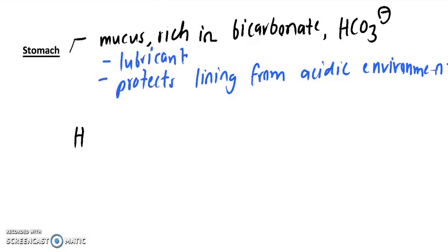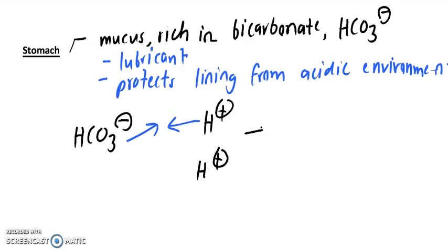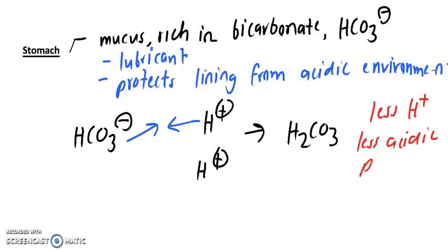And this works by, if there's bicarbonate floating around and there are acids in the environment, there's going to be a reaction. This is going to sop up some of these protons. So we have less free-floating protons. Now we have a less acidic pH.